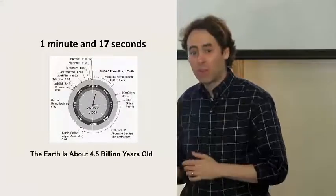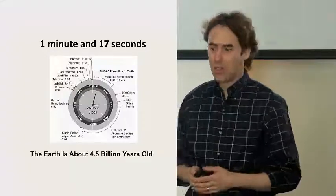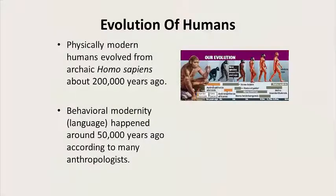The Earth is 4.5 billion years old. Modern human, in terms of the way a human looks, is about 200,000 years old. Modern human, in terms of behavior, is about 50,000 years old.